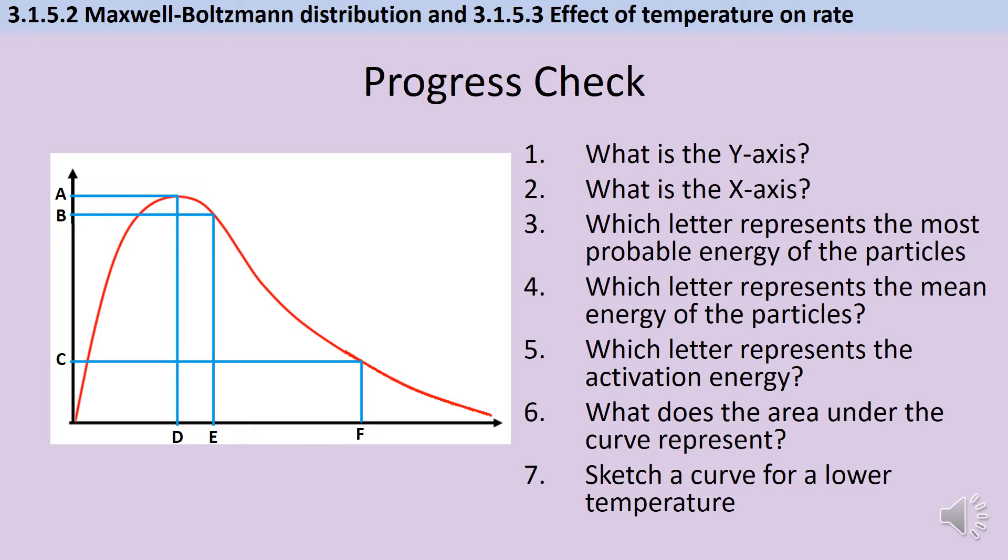On a Maxwell-Boltzmann distribution the y-axis always represents the number of particles but the x-axis is the energy that they have. The most probable energy of the particles is always represented by the peak of the graph so that's going to be d. Remember we're interested in the amount of energy not the number of particles that have that energy in which case it will be a. The mean energy of the particles is going to be e and the activation energy is f.